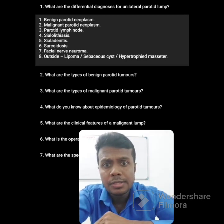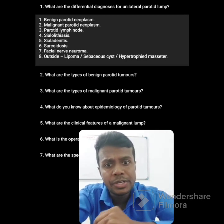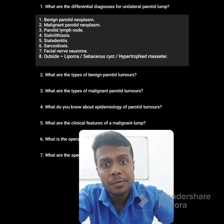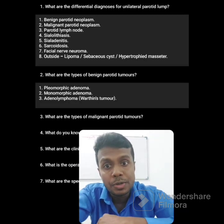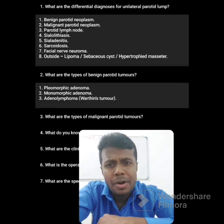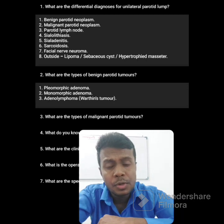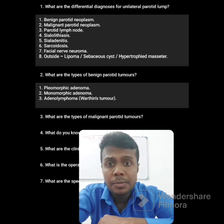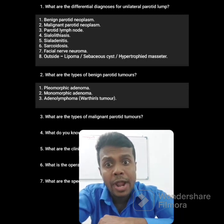What are the types of benign parotid tumor? The most common one is pleomorphic adenoma. It can also be monomorphic adenoma, or adenolymphoma (Warthin's tumor).